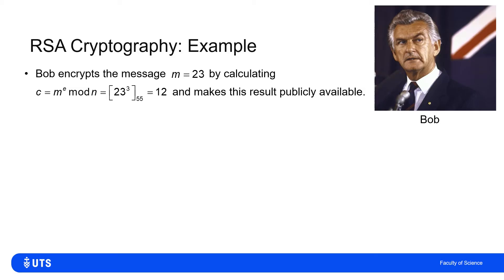Now enter Bob. So Bob has got all of the publicly available information that Alice has publicized, that n is 55 and E equals 3, and he wants to send her the message m equal to 23.